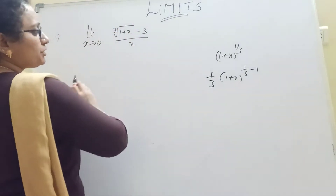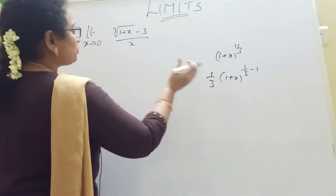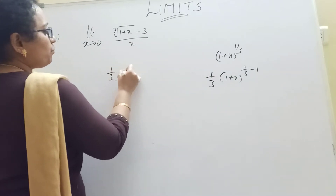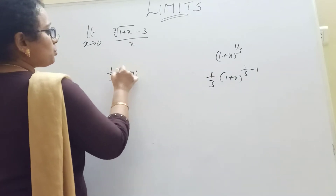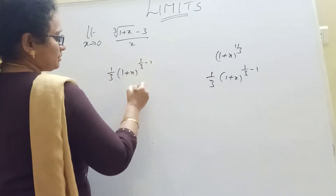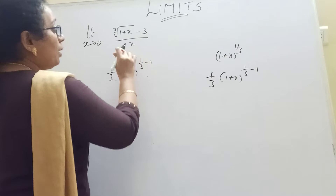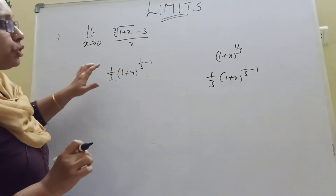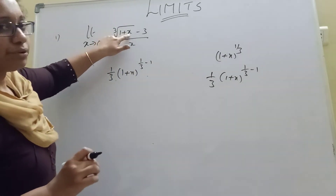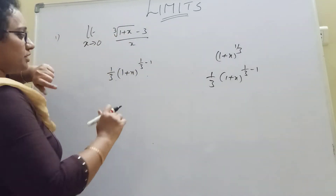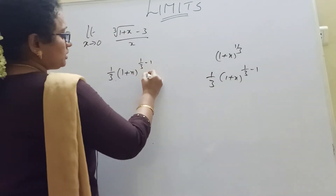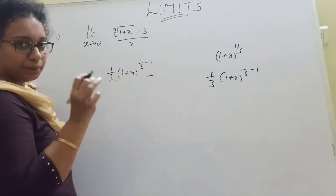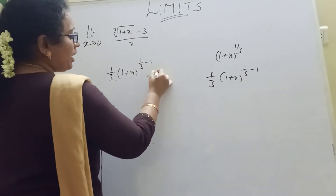So this is the numerator and the denominator is the derivative. The formula is the denominator. So, 1 by 3 — 1 plus x whole power 1 by 3 minus 1, into 1 by 2. If you have only a constant, only a number, the derivative will be 0.